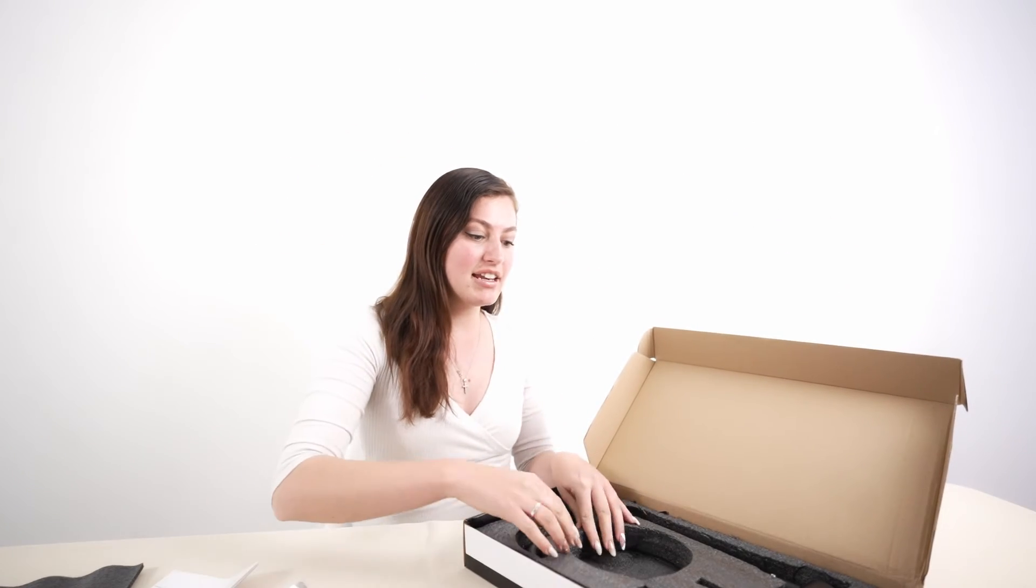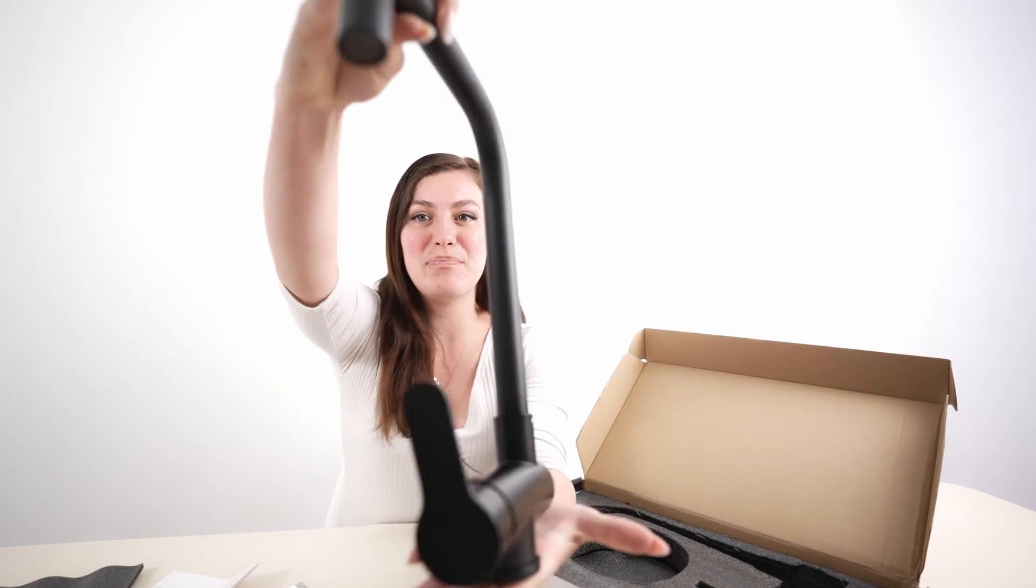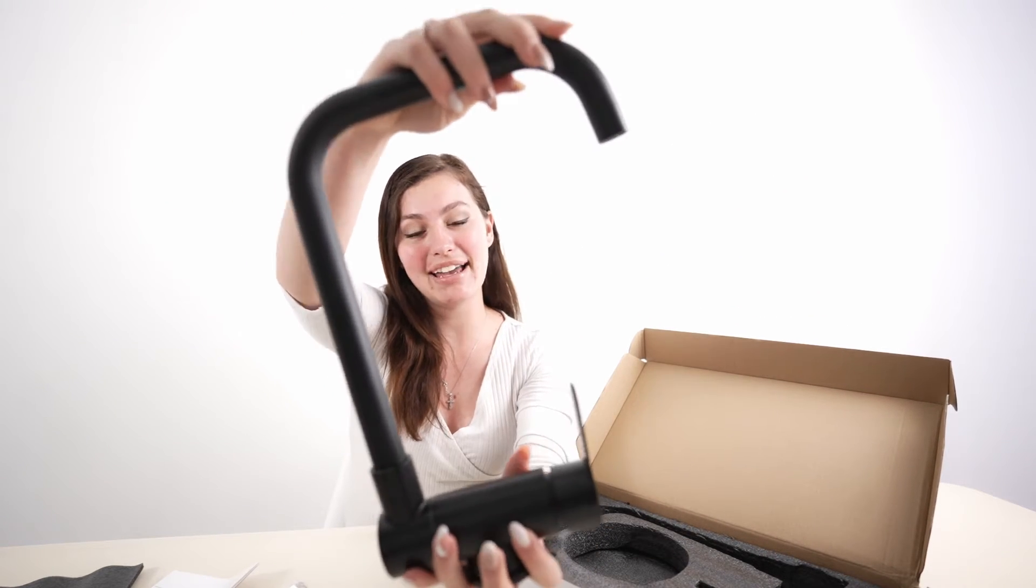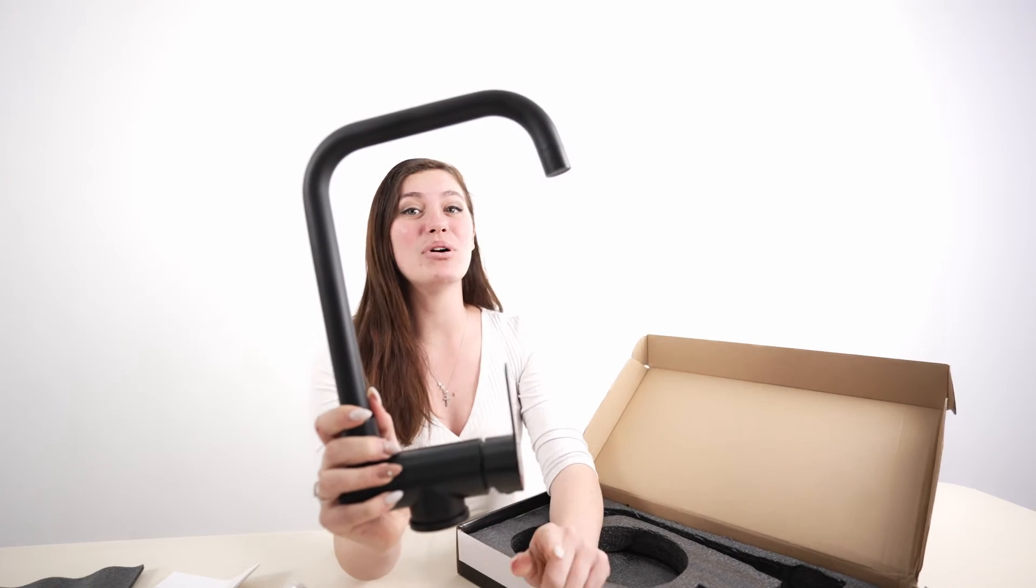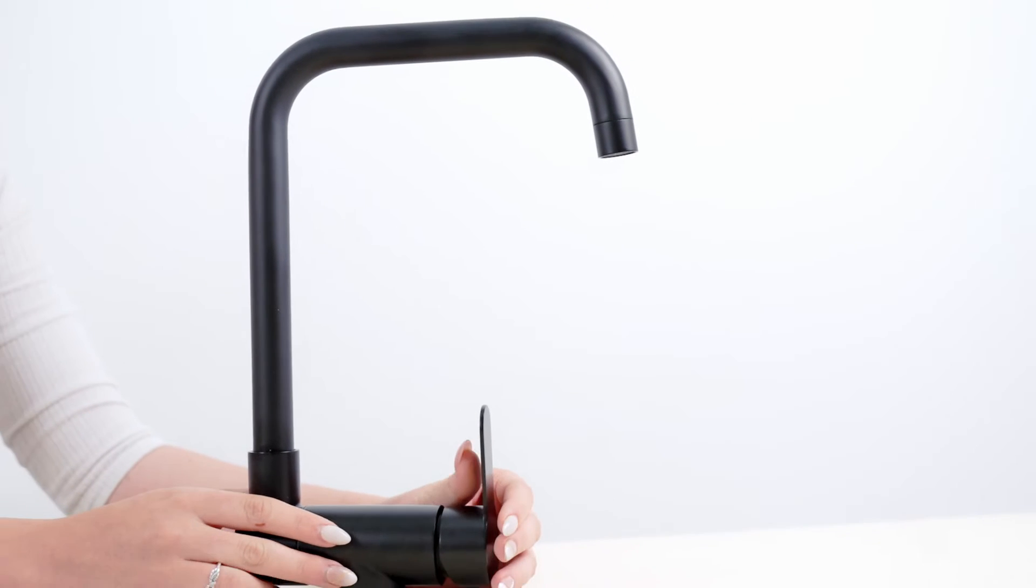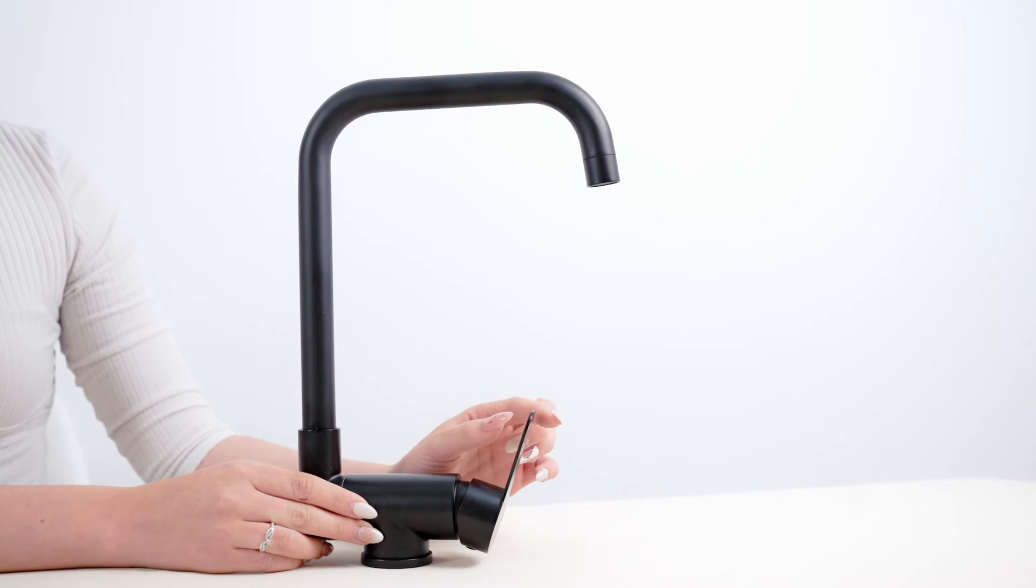And then we have the adjustable faucet, beautiful in matte black. And I'm going to show you how it can actually rotate, which is pretty cool. Okay guys, so it is made out of 304 stainless steel and it is rotatable, adjustable however you like.